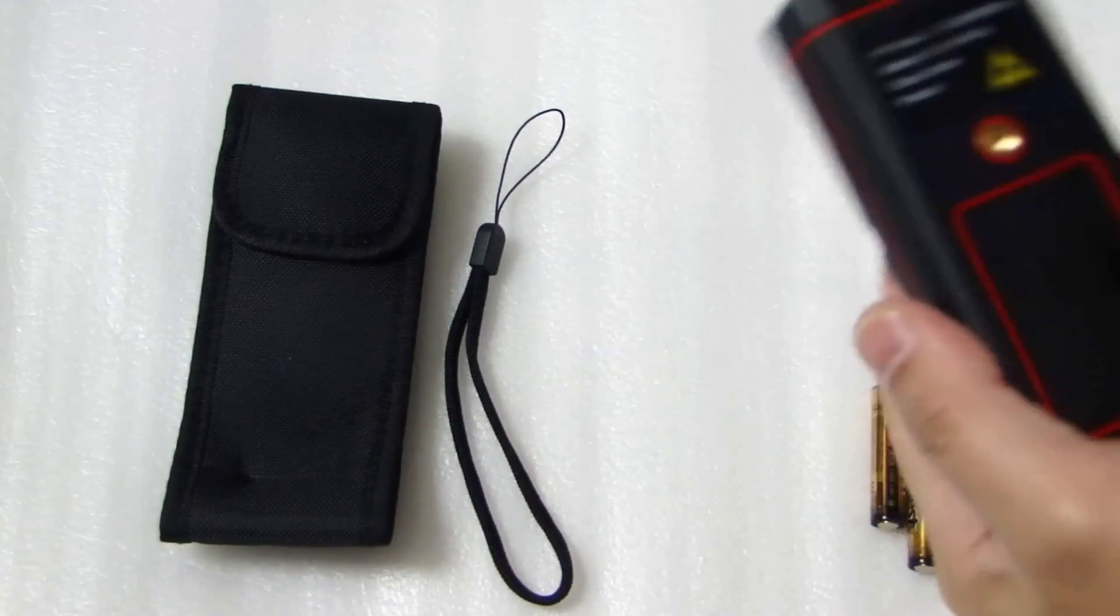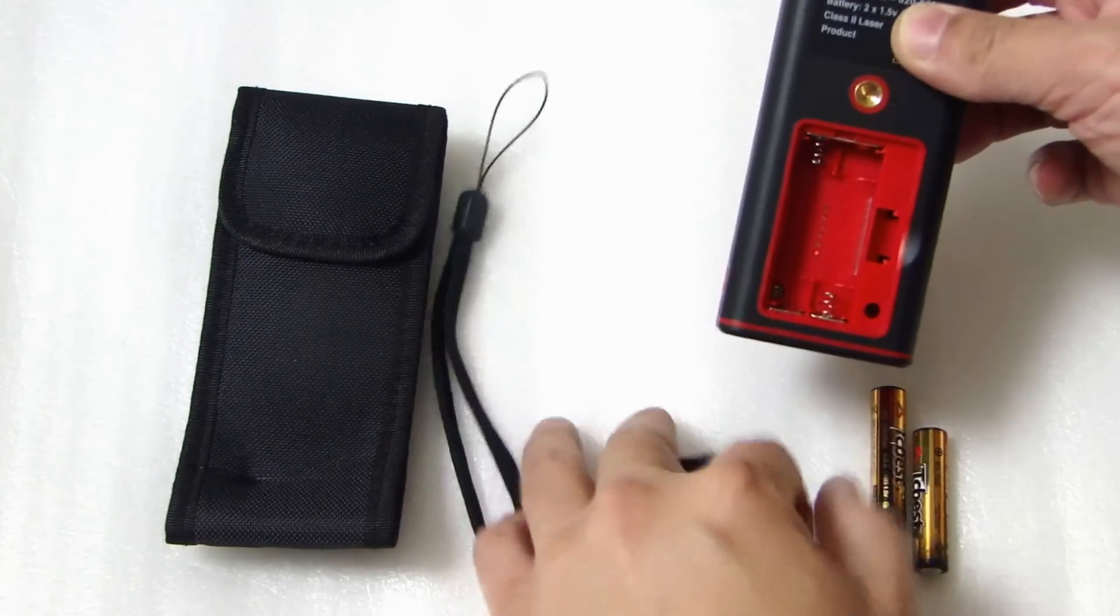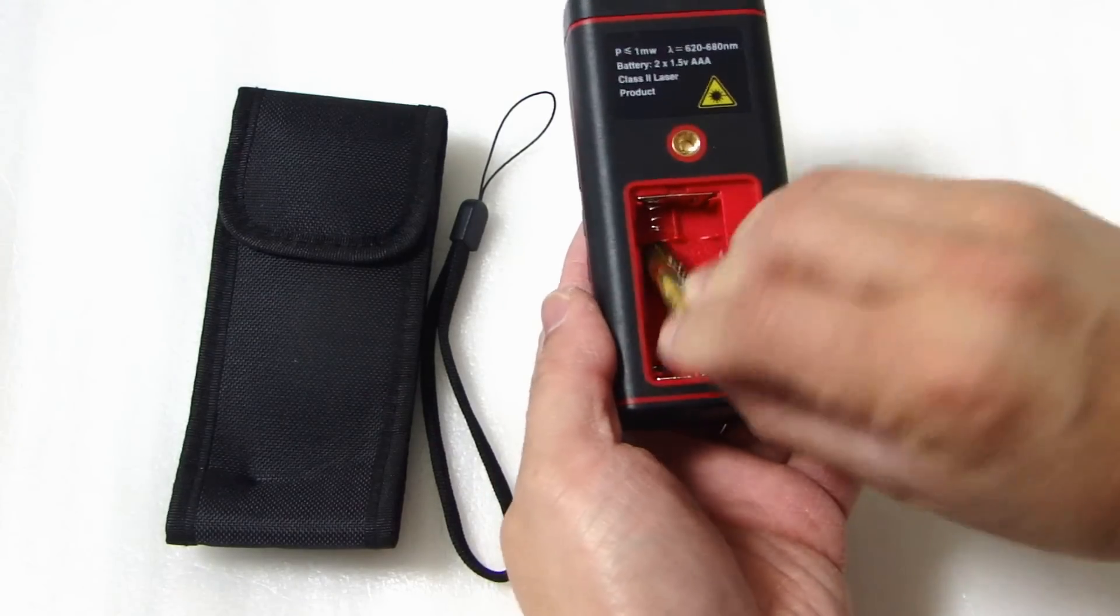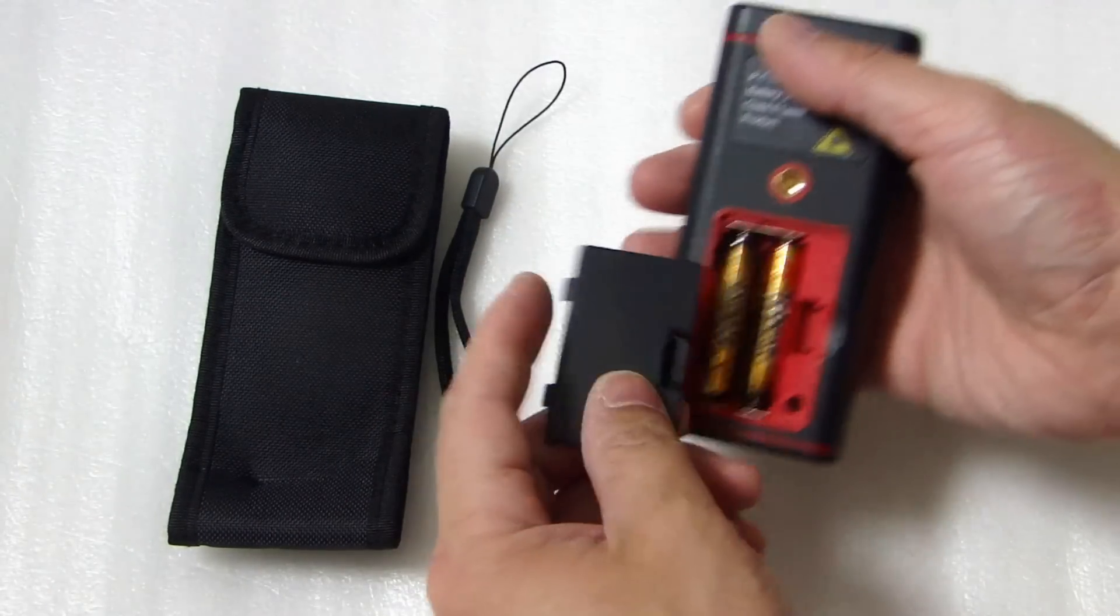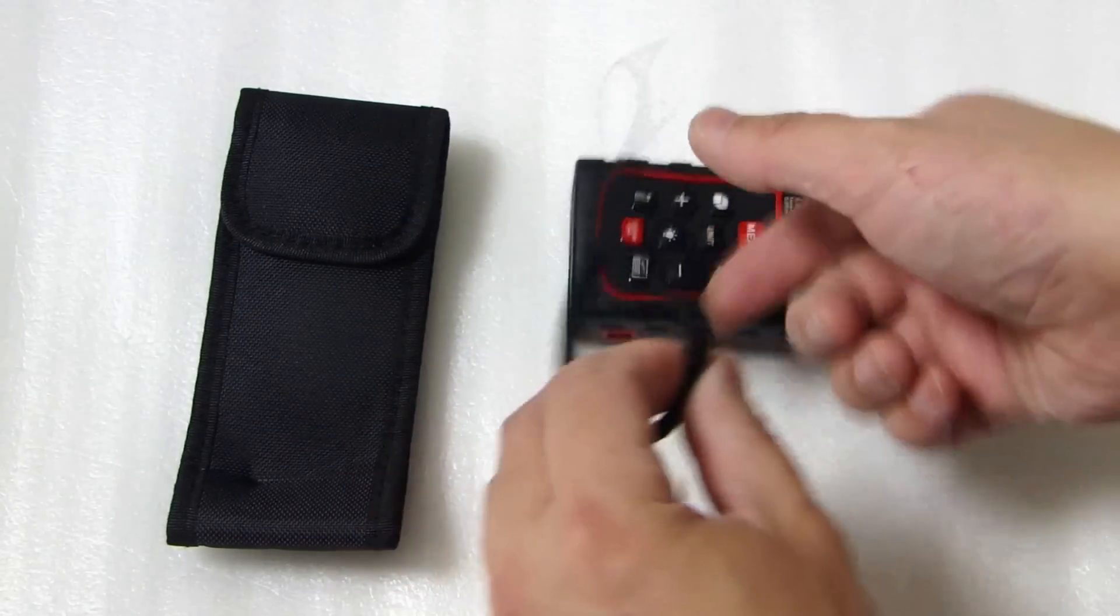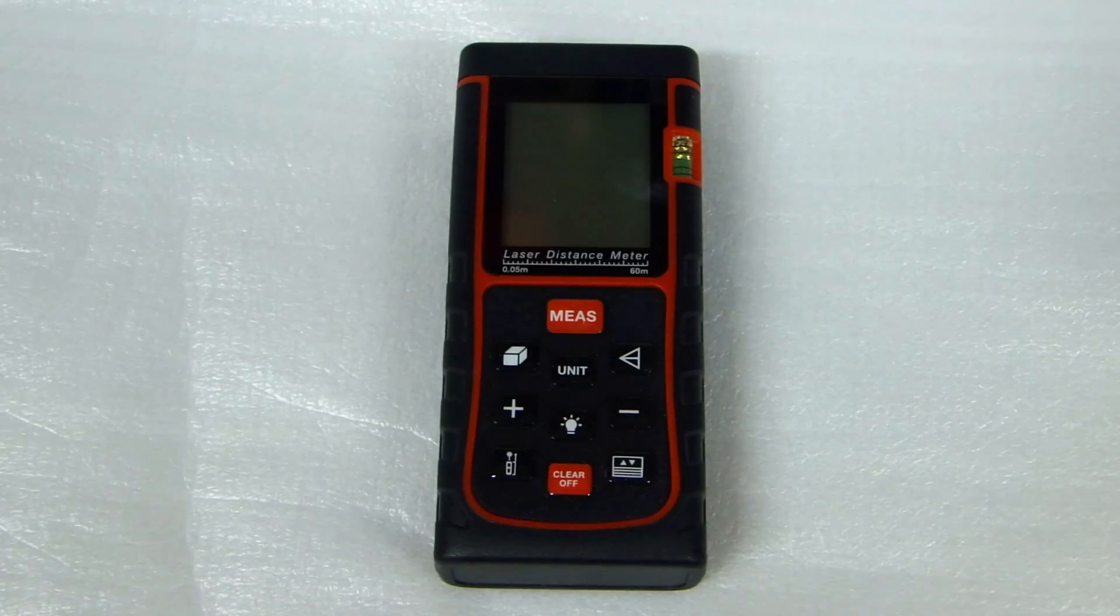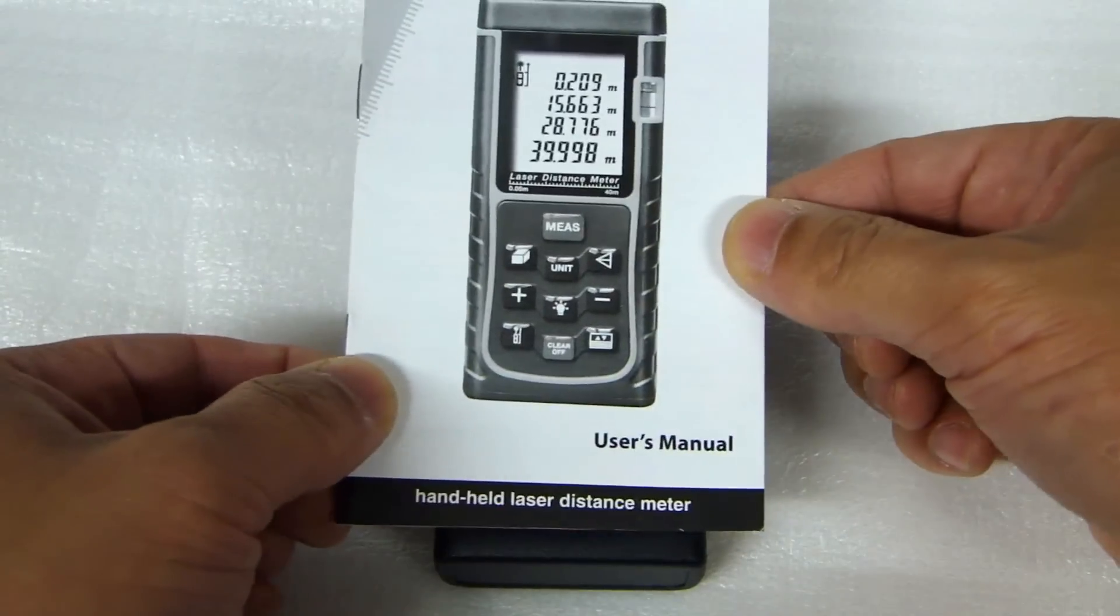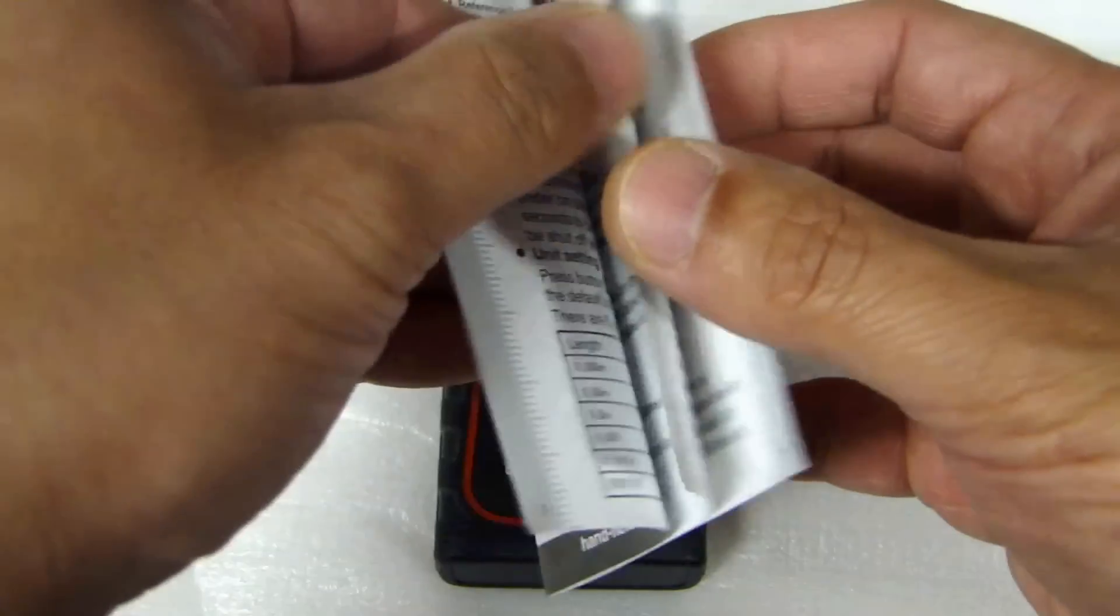To install the battery there's a cover you can remove at the back. Also you can install the hand strap on the side here. The user's device is very simple but I recommend you first reading the user's manual. And it covers all the functions of this measuring tool.